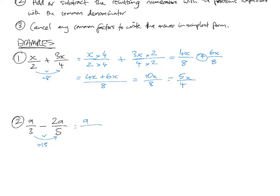a on 3. What did I have to times 3 by to get 15? I times it by 5. To avoid changing the number, I have to times the top and the bottom by 5. I'm subtracting. It's 2a on 5. What did I have to times 5 by to get 15? I had to times it by 3. Times both the top and the bottom by 3.